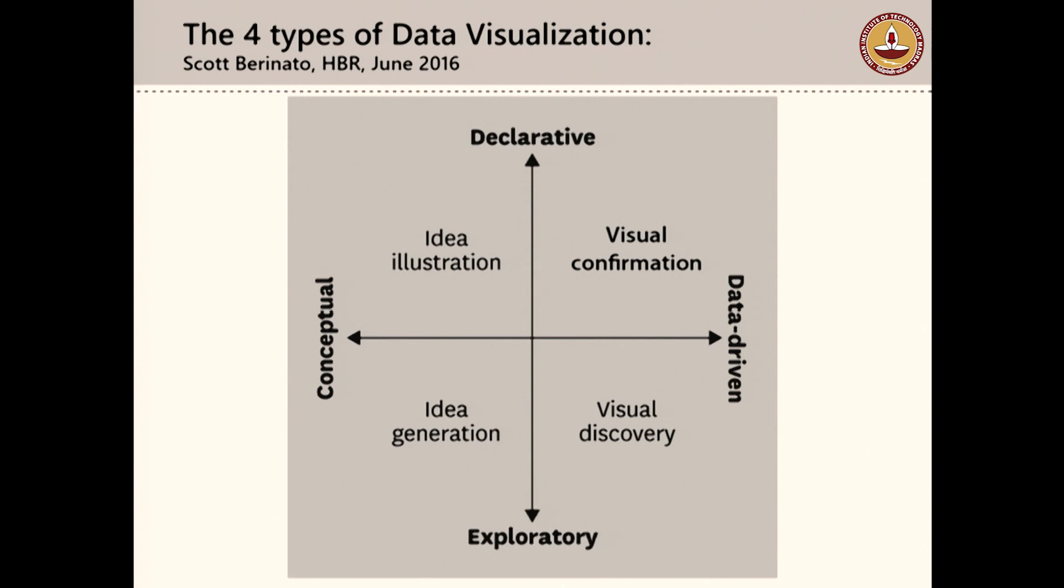The four types are: they are used for illustrating an idea, to confirm visually something, to discover something visually, or to generate an idea. On the left side you can notice that they are more conceptual. Sometimes it can be entirely free of data also. The two types on the right hand side, visual confirmation and visual discovery, are data driven—they are data heavy.